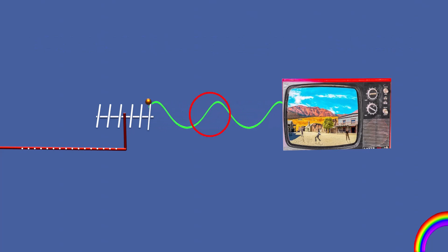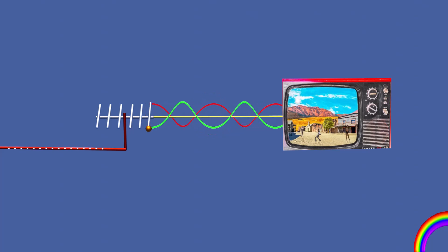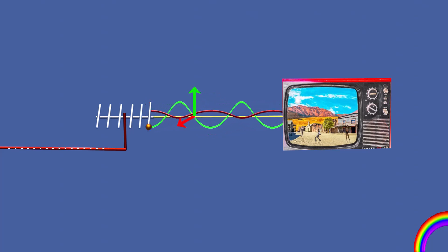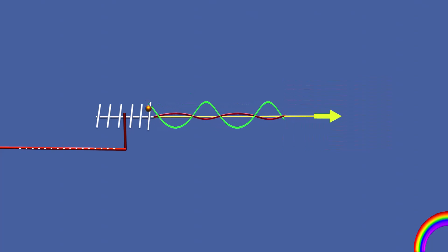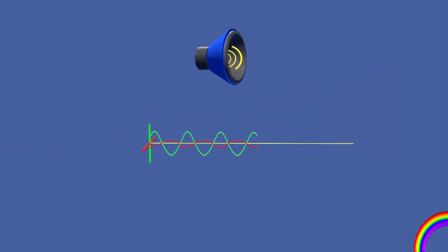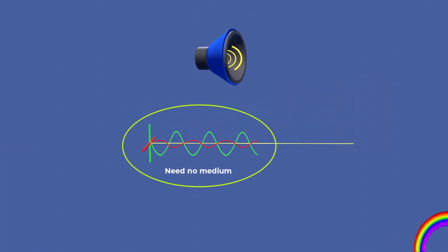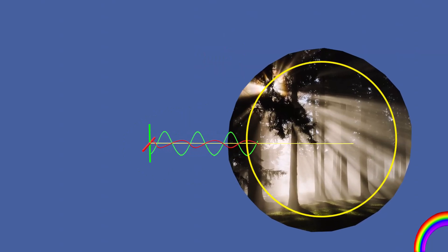Electromagnetic waves are transverse waves, in which the electric and magnetic fields oscillate perpendicular to each other and to the direction of propagation. Unlike sound waves, they do not need a medium and can travel through a vacuum at the speed of light.